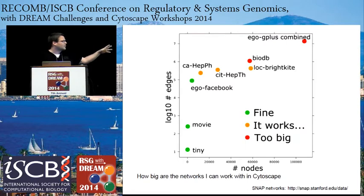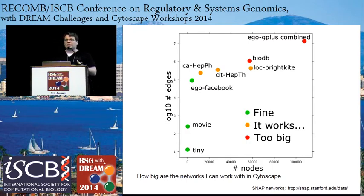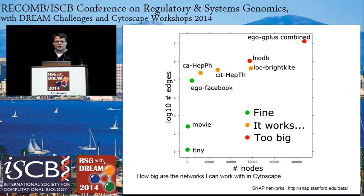The green ones are mostly fine. The ego Facebook network is about 4,000 nodes and 88,000 edges. The orange ones become in the range where you can open them on the desktop, but don't expect much to do with them, because you've reached the boundaries of what your memory can support and what is usable in Cytoscape. The red ones are examples of networks that are just too big to handle on your notebook in Cytoscape.